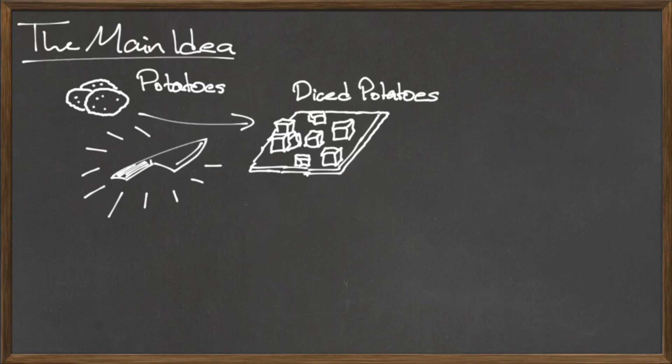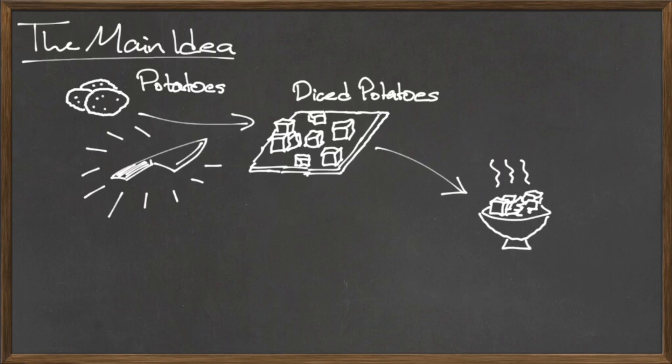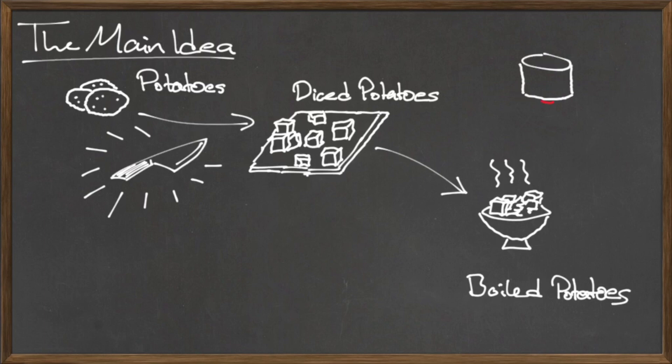Next, we need to boil the potatoes. We can view this process as a function, with the input being a diced potato, the output being a boiled potato, and the rule applied is that of boiling.